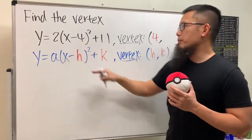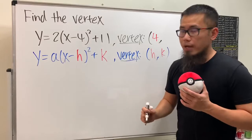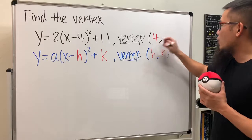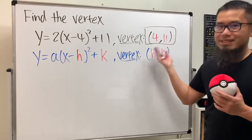Right, even though you see negative four it's actually positive four. You just do the opposite when you have the number inside. And then when we have plus eleven, well that's just what k is. So we just have four comma eleven and that's it.